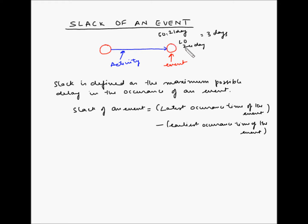The latest occurrence and the earliest occurrence of an event will depend on the activities which are ending on this node. If there are multiple activities, then the earliest occurrence and latest occurrence depend on the combination of the earliest and latest times of all the activities. Let us take an example to understand this better.